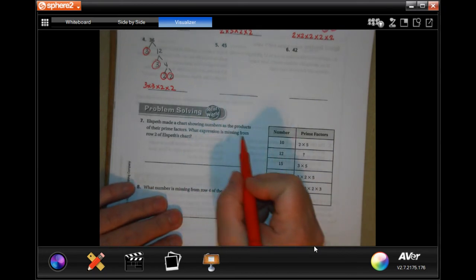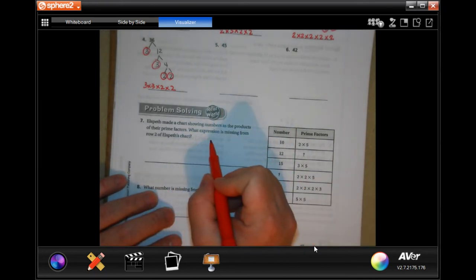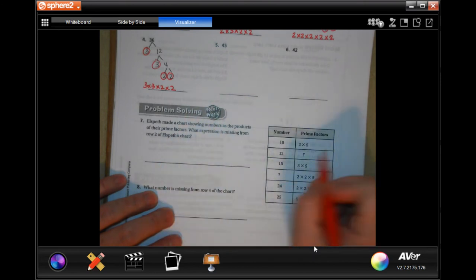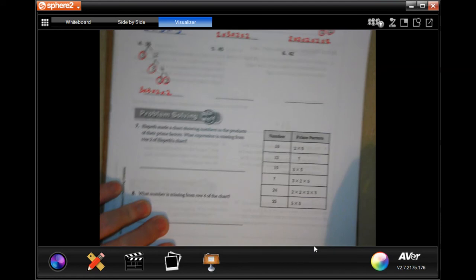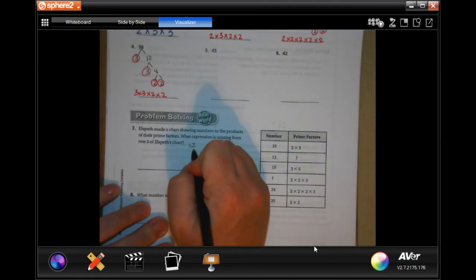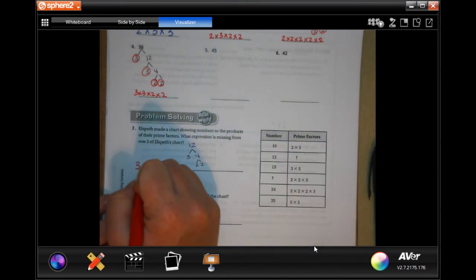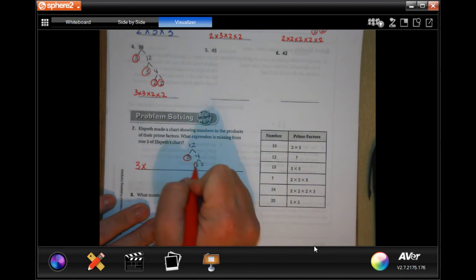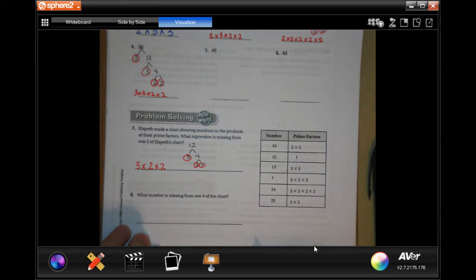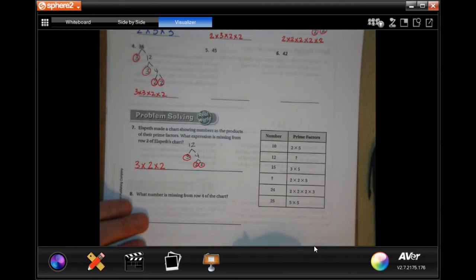Alspeth made a chart showing numbers as products of their prime factors. What expression is missing from row two of her chart? So, we need to do 12. 12 is three and four, and four breaks up to two and two. So, three times two times two. Done. Or two times two times three. It doesn't matter. You're multiplying. It goes in whatever order you want.